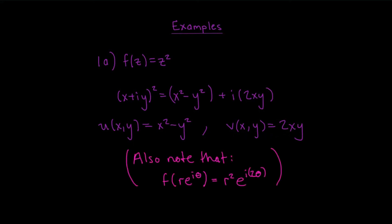It's also not a bad idea to think about what this function is doing in terms of polar coordinates. If the complex number you're feeding in is given as r·e^(iθ), then when you square it you get r²·e^(i2θ). This is just a special case of the multiplication of complex numbers from the previous video.